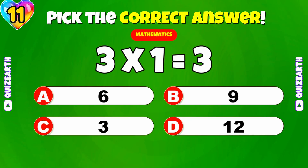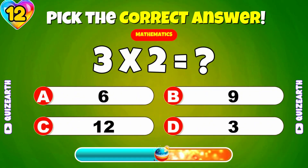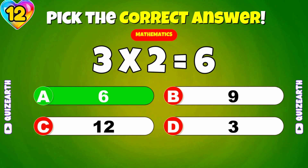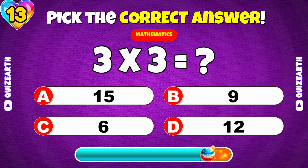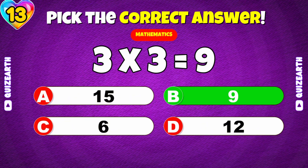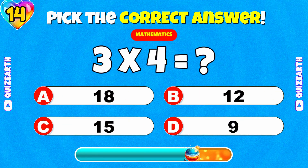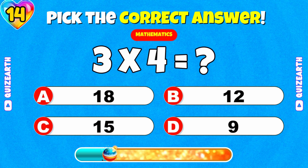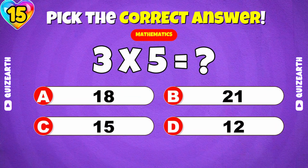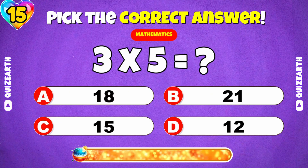What is 3 times 1? 3. What is 3 times 2? 6. What is 3 times 3? 9. What is 3 times 4? 12. What is 3 times 5? 15.